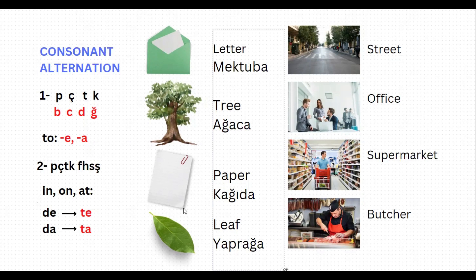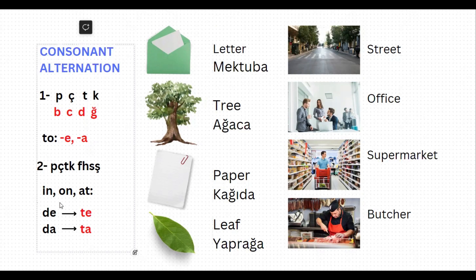Alright, now let's take a look at the second form of consonant alternation. This time, the word is ending with peçeteğe or fehseşe, and it continues with a suffix starting with d — de or da — which means 'in,' 'on,' or 'at' in Turkish. Then this d alternates to t, so de becomes te and da becomes ta.